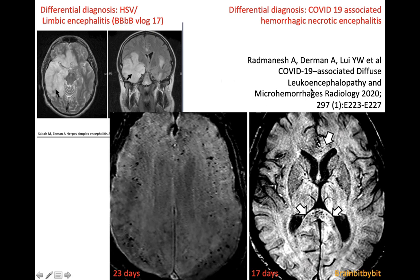With the recent pandemic, there are a lot of things described in COVID patients, including a so-called diffuse leukencephalopathy and microhemorrhages in patients in their 30s and 40s. The hemorrhages were sometimes located more in the periphery than in acute hemorrhagic leukencephalopathy, but in some patients they were also in the corpus callosum. A confounding factor was that these patients had been on mechanical ventilation, which may have contributed to the hemorrhages superimposed on white matter inflammation.